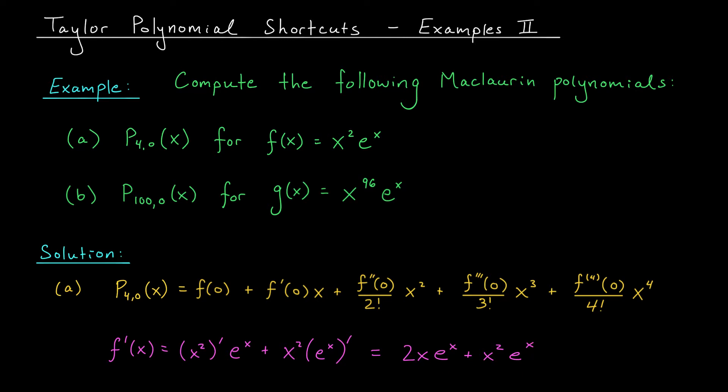Applying the product rule once is no big deal, but applying it four times — that's a pain in the butt. Nevertheless, I don't see another option. We don't currently have a shortcut for dealing with a function like this, so let's go ahead and compute these derivatives and build our Maclaurin polynomial.